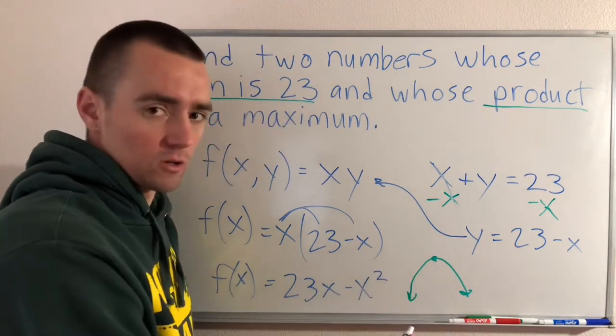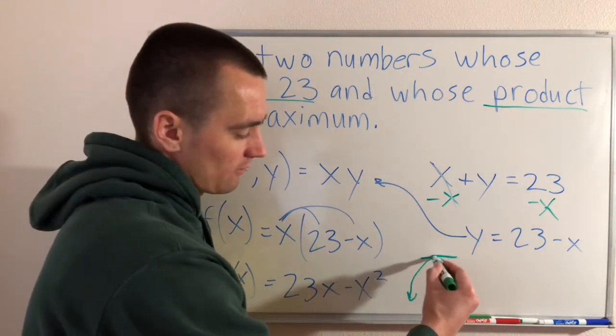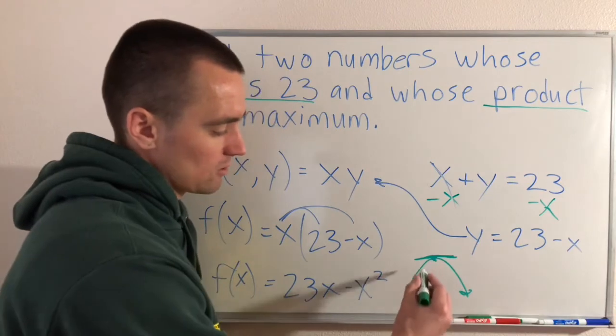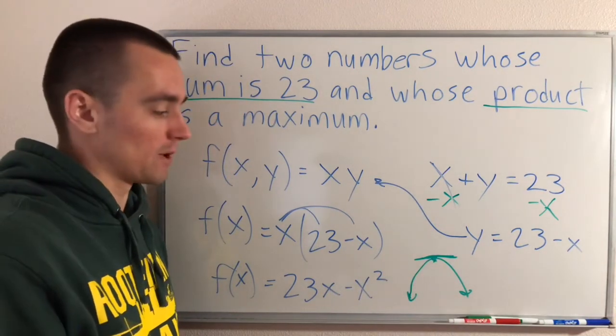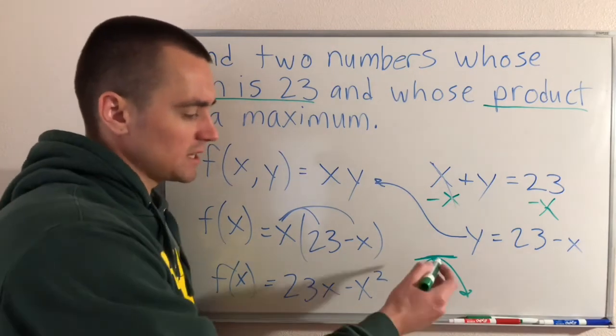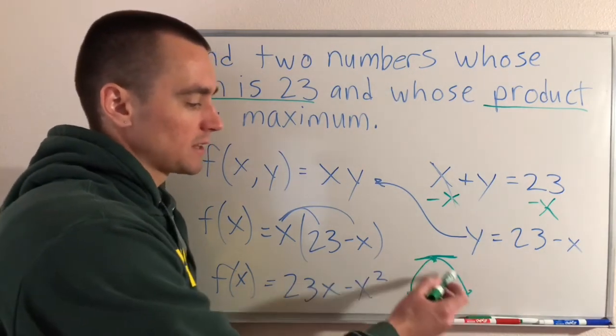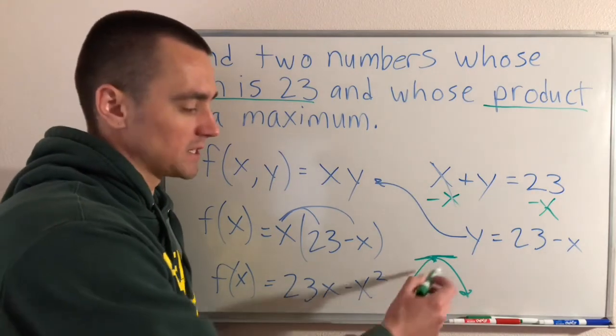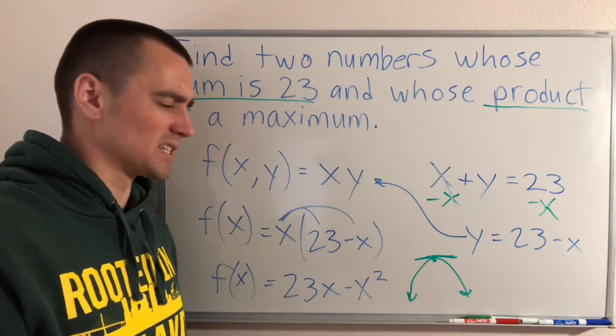And if we think about where our critical number would be on this function, the critical number is just going to appear wherever there is a slope of zero, or wherever there is a maximum or a minimum, a local maximum or minimum. So we can see here that there's only going to be one critical number, and based on the fact that this parabola is facing downward, it's clearly going to be a maximum.